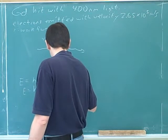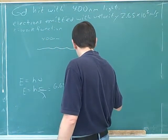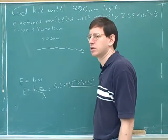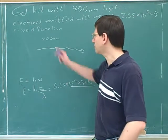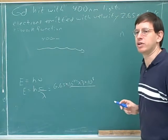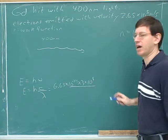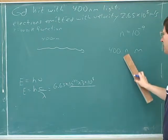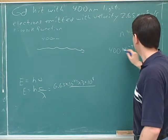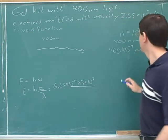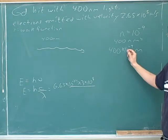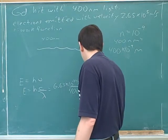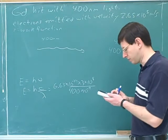So this would be 6.63 times 10 to the negative 34 times 3 times 10 to the eighth. And what do I plug in for lambda? 400 times 10 to the negative 9. Yeah. That's the quickest way to deal with this. What does the symbol n really mean? N really means 10 to the negative 9. So the quickest way to do this conversion is when you're given nanometers, just erase the n and replace it with 10 to the negative 9. You can always just erase the n and replace it with 10 to the negative 9, and then we don't have to do such a complicated conversion. So this would be 400 nano means 10 to the negative 9 meters. OK, so we can work that out.